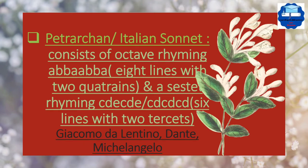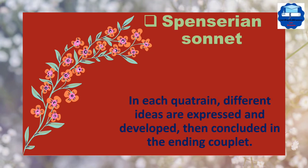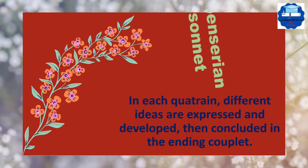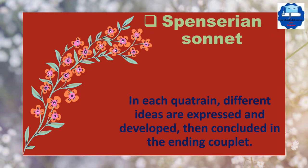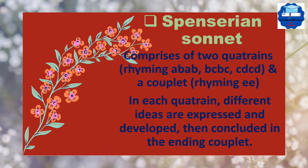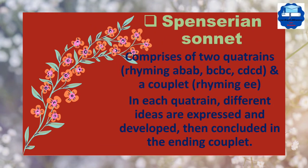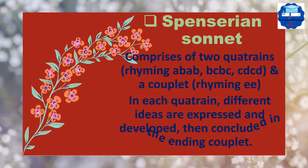The second type is Spenserian sonnet. As the name shows, it was named after Edmund Spenser. It comprises of two quatrains rhyming ABAB, BCBC, and a couplet rhyming EE. In each quatrain, different ideas are expressed and developed, then concluded in the ending couplet.